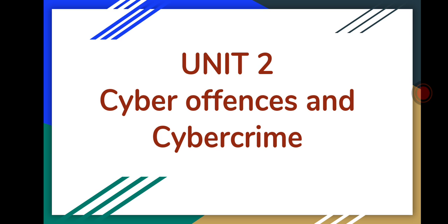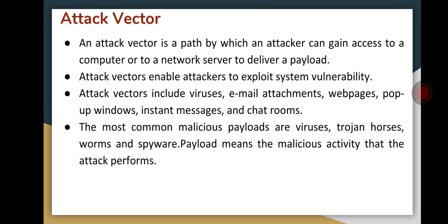Now we will see the attack vector. An attack vector is a path or a method by which an attacker can gain access to a computer or to a network server to deliver a payload. Attack vectors enable attackers to exploit system vulnerabilities — that is, to make use of any type of weakness or failure present in a computer so that they can easily perform unauthorized actions on a computer system.